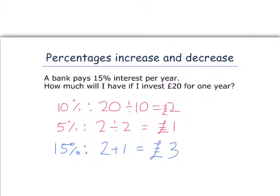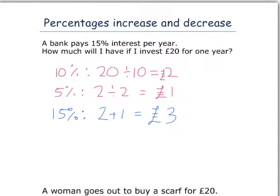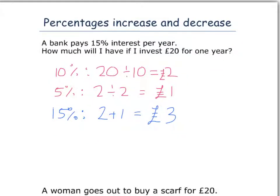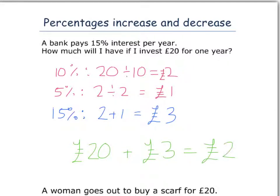And remember, because of interest, we're going to add it on to our initial £20 we put into the bank. So our final answer is we're going to have our original £20, and we're adding on the £3, which makes £23 in all.